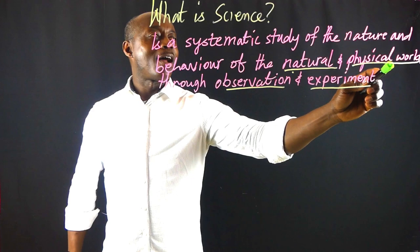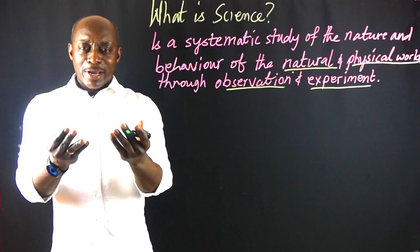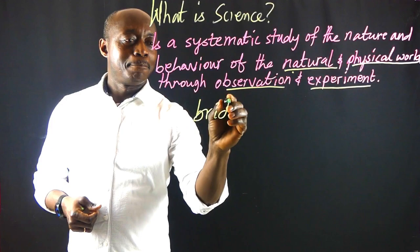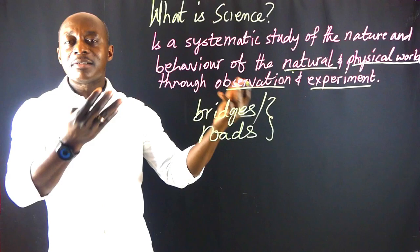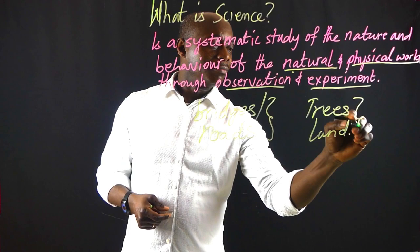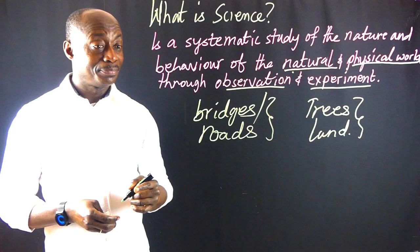Some of you mentioned things like bridges and roads, while others mentioned trees and land. Now let me ask you: what is the major difference between these two groups of things — bridges and roads versus trees and land — as far as who made them is concerned?